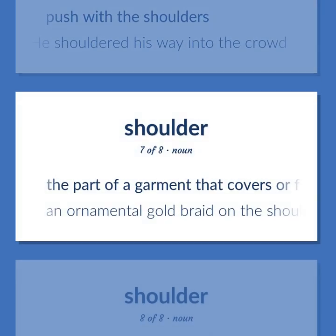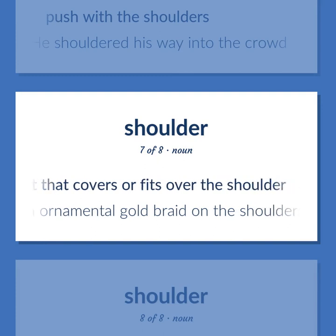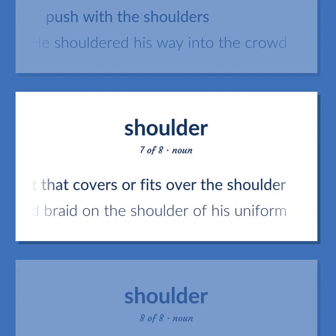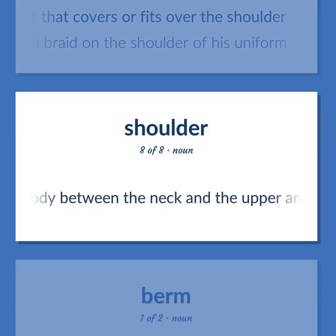The part of a garment that covers or fits over the shoulder. An ornamental gold braid on the shoulder of his uniform. The part of the body between the neck and the upper arm.